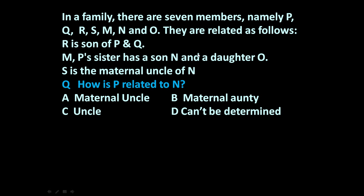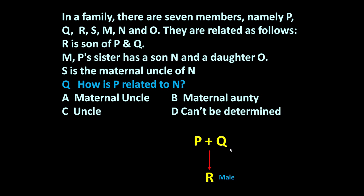Based on this information we have to find out the answer. There may be more questions based on the information given above. To analyze this information, let us learn how to draw a family tree so that we can answer all questions. R is son of P and Q, so let us draw R is son of P and Q — P plus Q, husband and wife.